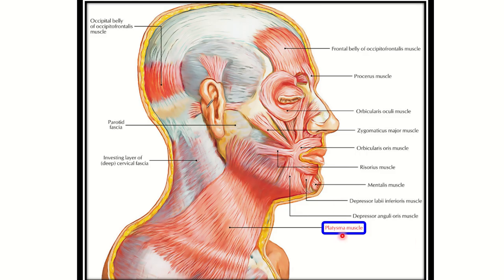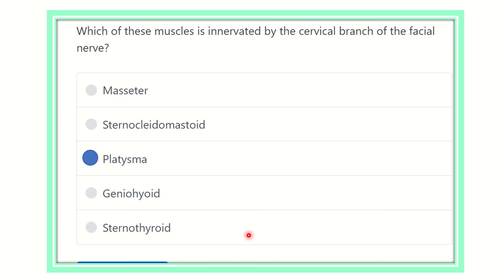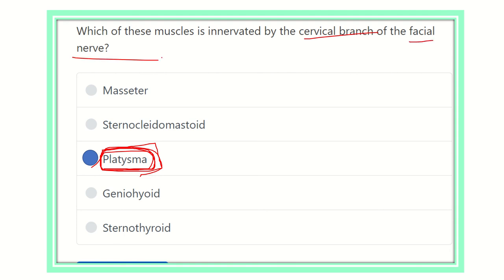The cervical branch of the facial nerve supplies the platysma muscle. It lies in the neck area. A special feature of this muscle is that it is a subcutaneous muscle — like the dartos muscle — not a deep muscle. So the platysma is innervated by the cervical branch of the facial nerve, one of its terminal branches.